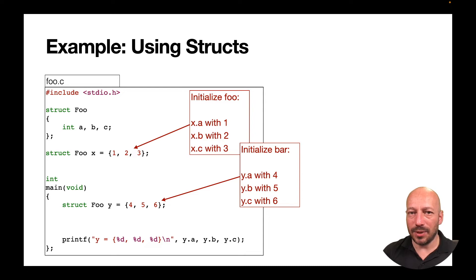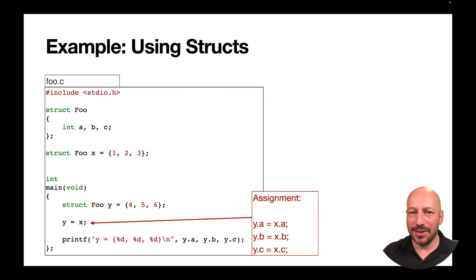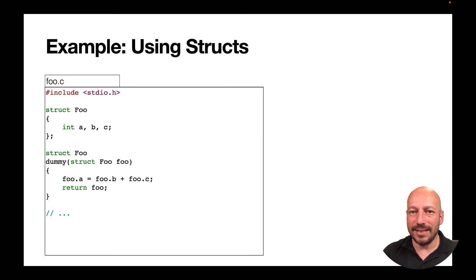You can assign a structured variable to another structured variable if they have the same type. This copies all members, so printing y's members will show x's initial values. You can also use structured data types as parameter types and return types in functions. In C, function calls are by value, so the function receives a copy of its parameters — this is important if members are pointers, since you copy the address but not the data behind the pointer.